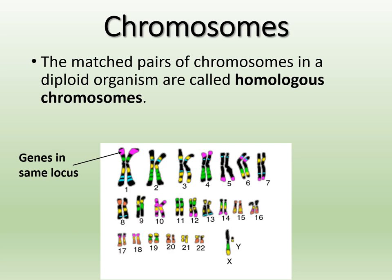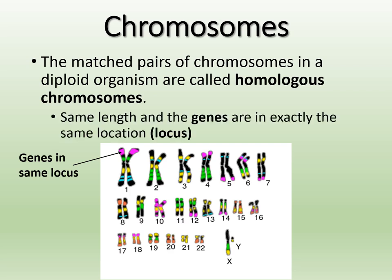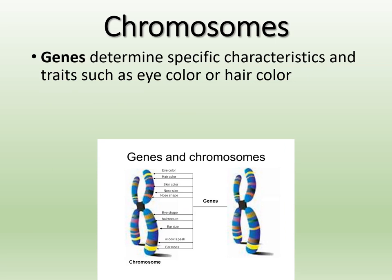In diploid, we have matched pairs of chromosomes referred to as homologous chromosomes. Homologous just means the same — the two chromosomes paired together are the same length, and most importantly, the genes are in the same location. That location is referred to as a locus — the location of the gene on the chromosome. In the picture, the same color highlights represent the same gene lined up in the same position on paired chromosomes, except for our sex chromosomes.